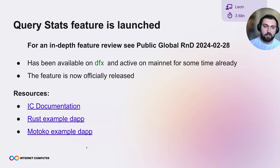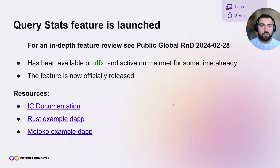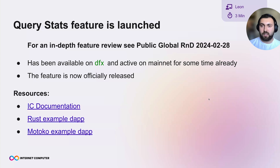This feature has been active on mainnet for quite some time and available in DFX, but we wanted more insight into how it behaves on mainnet before releasing it officially. It is now officially released with documentation ready. We also have two basic sample dapps — one in Rust and one in Motoko — showcasing how to get this data out of the canister status reply. For how this works under the hood, there's a demo from end of February.